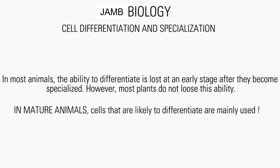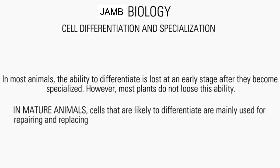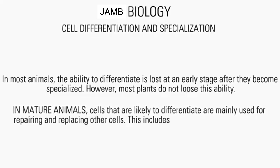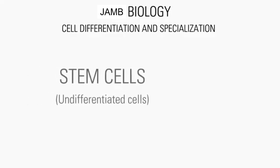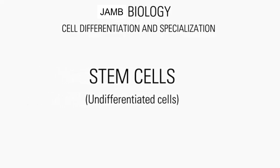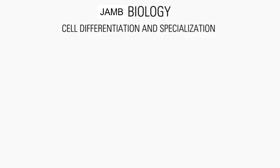This includes cells like skin cells and blood cells. Cells which are yet undifferentiated are called stem cells. We will discuss more about this in another video.